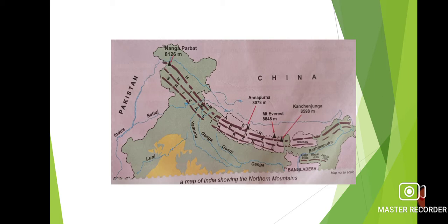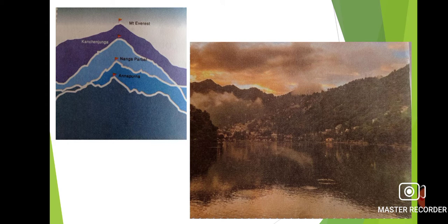The Greater Himalayas, Himadri, is the highest of the three rows. Mount Everest, the highest mountain peak in the world, is located in the Greater Himalayas. Nanga Parbat, Annapurna and Kanchenjunga are the three other important peaks of the Greater Himalayas. The Greater Himalaya range is permanently covered with snow — it is extremely cold and difficult to live here.